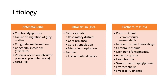The antenatal causes include Cerebral Dysgenesis, failure of migration of neurons, congenital malformation such as congenital cysts or fusion defects, congenital infections like TORCH infections, vascular occlusion due to abruption of placenta or placenta previa, and other antenatal causes such as GDM (Gestational Diabetes Mellitus) and PIH (Pregnancy Induced Hypertension) in the mother.